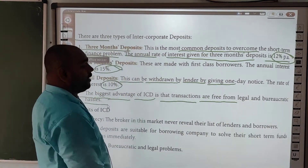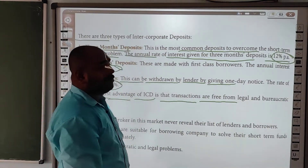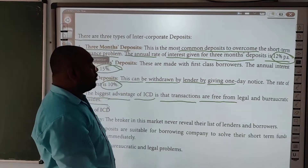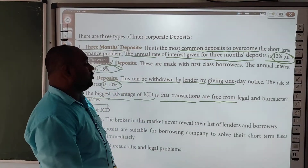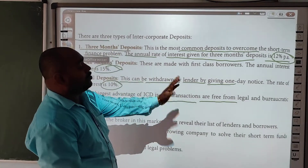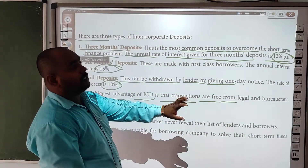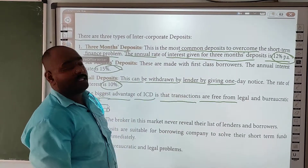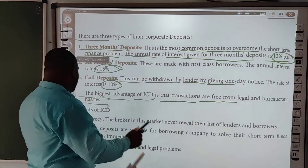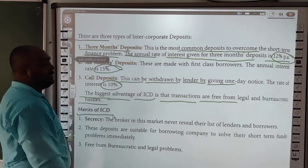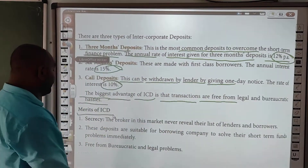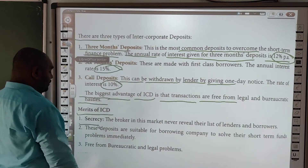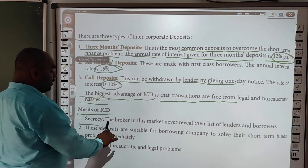Bureaucratic ka matlab sahi se liya jaata hai — is tarah ki cheezein jo hoti hain legally procedure se ya phir kisi rules and restrictions se, yeh kya hoti hain, poori tarah se free hoti hain. Ab merit ki baat kar lete hain ICD ki — Inter Corporate Deposit ki.